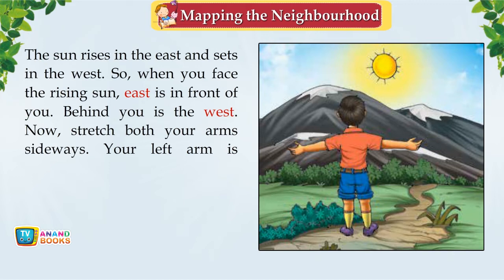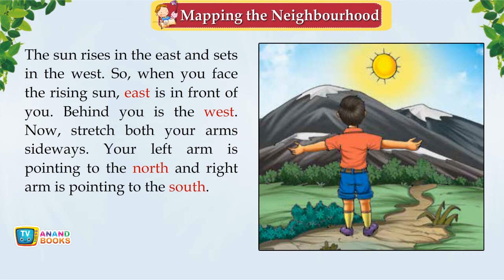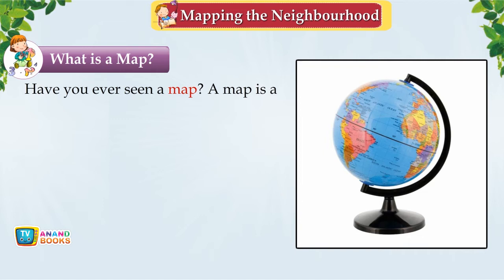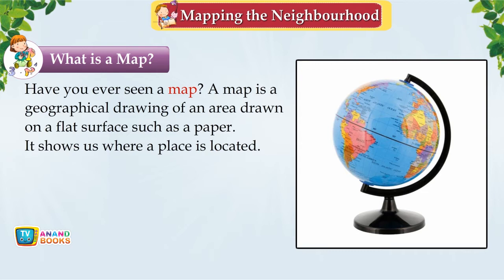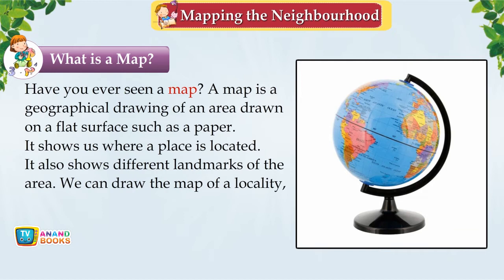What is a Map? A map is a geographical drawing of an area on a flat surface such as paper. It shows where a place is located and shows different landmarks of the area. We can draw the map of a locality, town, city, state, country, continent or the world. A collection of maps in a book is called an atlas.